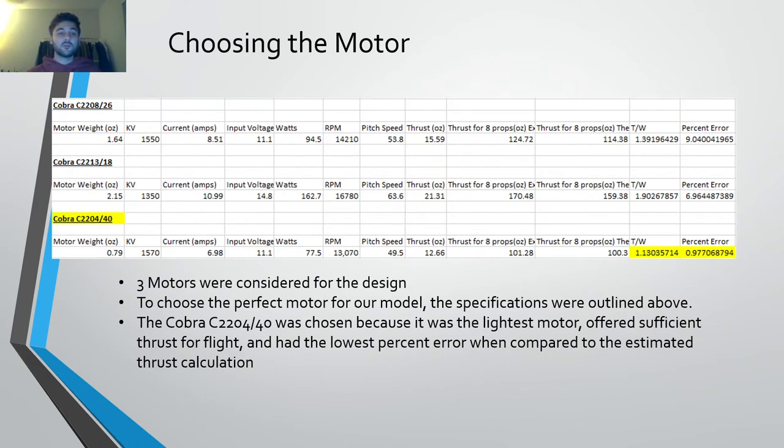Comparing that data to three different motors to choose the motor, we outlined the specifications above. In the end, the Cobra C 220440 was chosen because it was the lightest motor out of all three. It offered sufficient thrust for flight and had the lowest percent error when compared to the estimated thrust calculation.